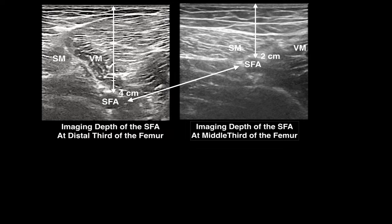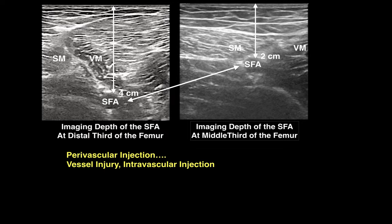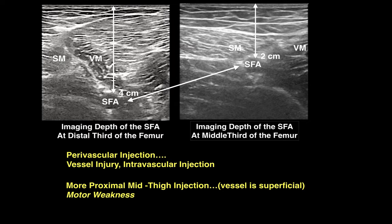Two points are well illustrated by these ultrasound images. First, perivascular injection can be challenging when the artery is deep and poorly visualized. Thus, deep, poorly visualized arteries present a risk with respect to vessel injury and intravascular injection. Second, the image depth for the SFA is markedly improved by moving the transducer proximally to the mid-femur, but how does this change the risk of quad weakness after injection?